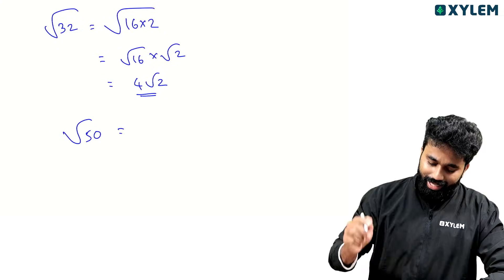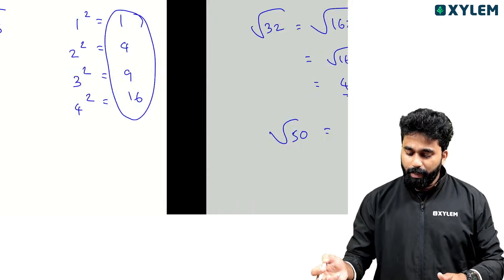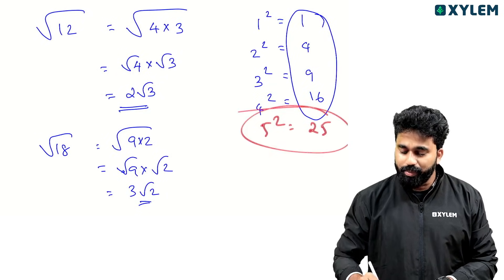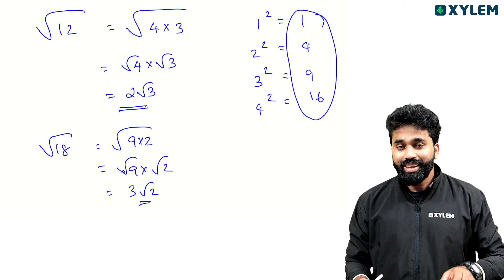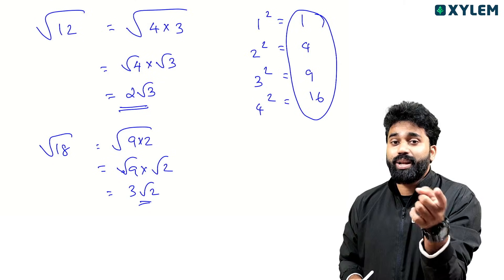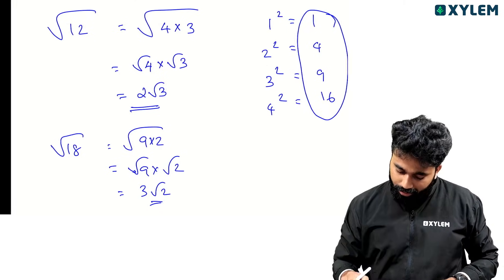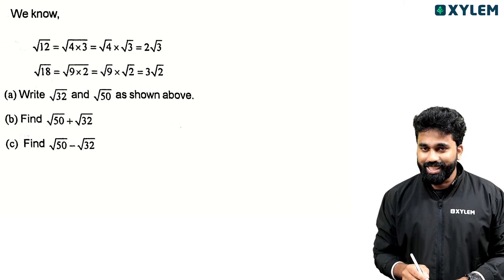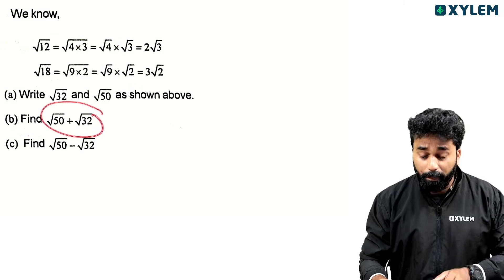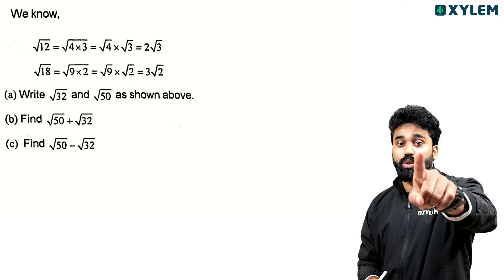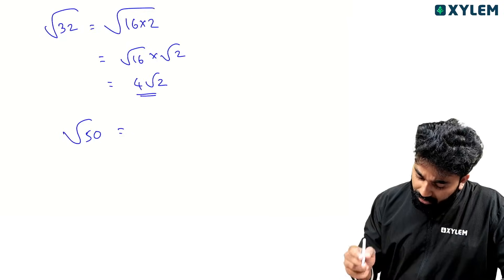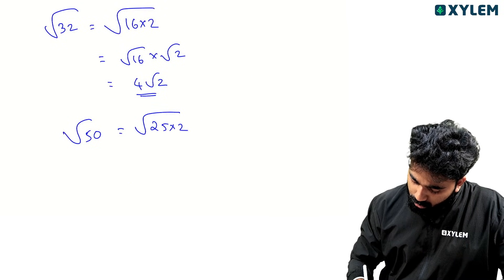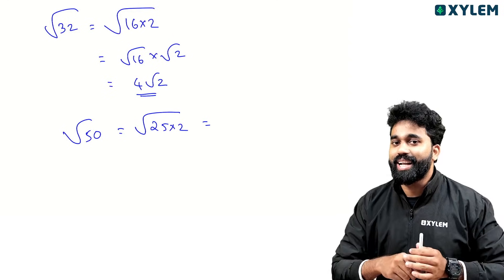Thank you for that. We're going to get root 10. Then we'll get 4 score or 5 score. Now we're going to get the answer to our questions. We'll get our feedback to our class. In the same way, we're going to answer this question. Root 50 plus root 32. Root 50 plus root 32. Now we're going to answer: 25 into 2.